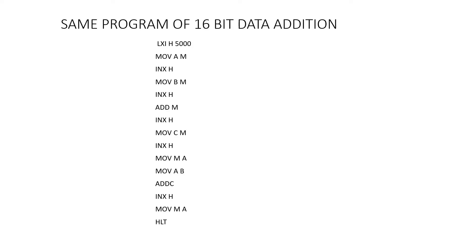The same program can be done another way — without using LHLD or SHLD. We can take 5001 and 5003 data, 5000 and 5002 data, add them, and whatever carry is generated, put it in another register and then continue. The question remains the same: add the data from 5000-5001 to 5002-5003 and place the result in 5004 and 5005. First, point to the first memory location, take that data to the accumulator, go to the next memory location, and put that data in the B register.